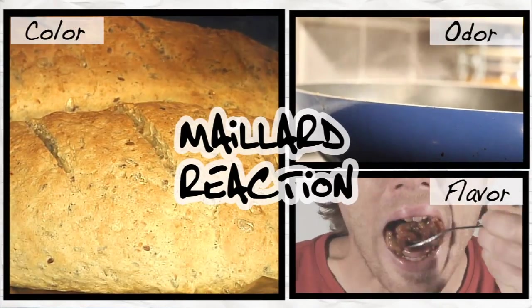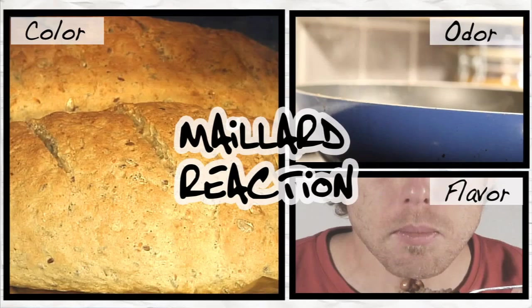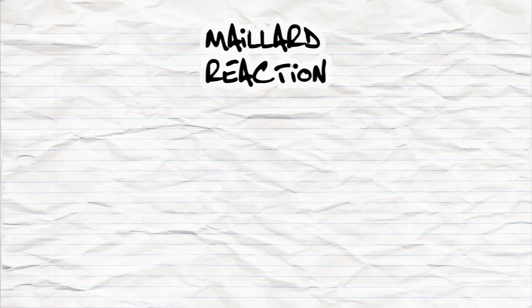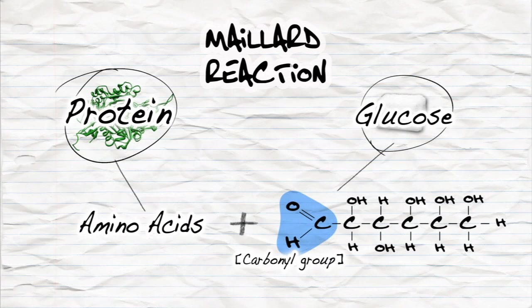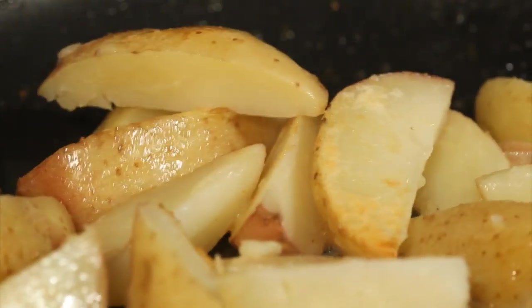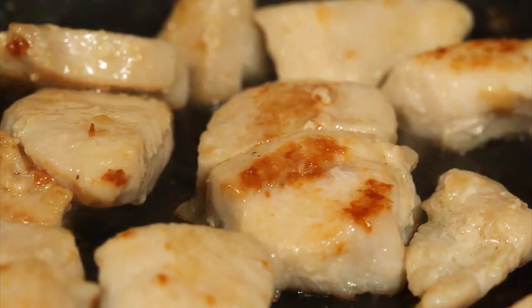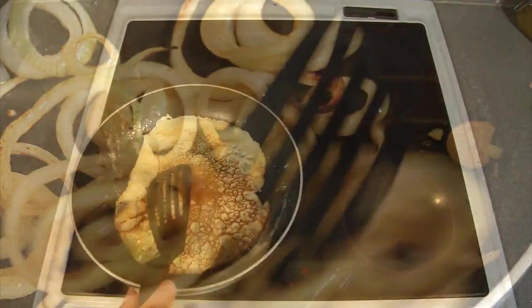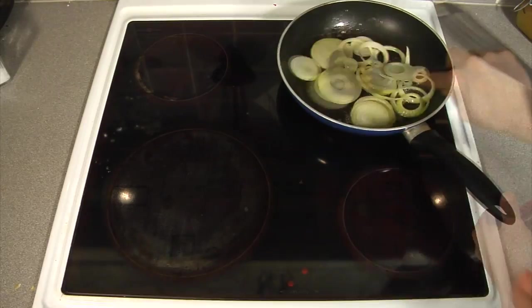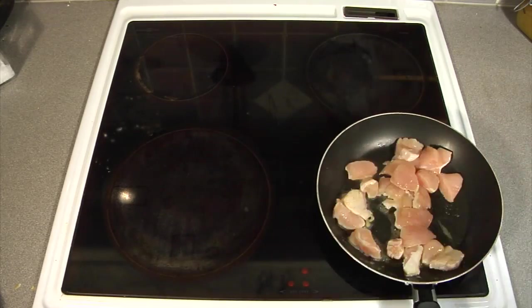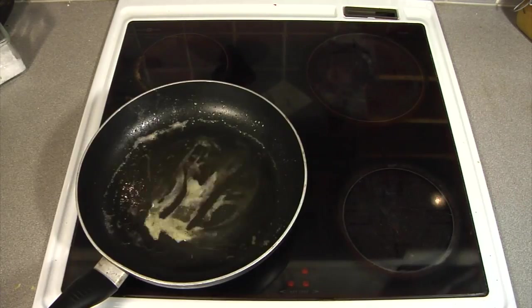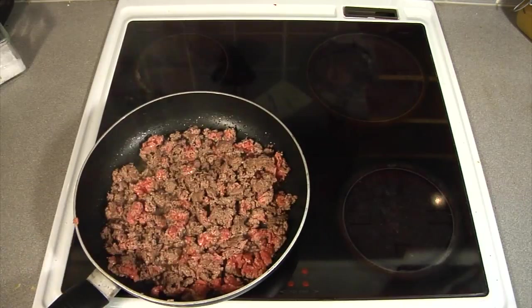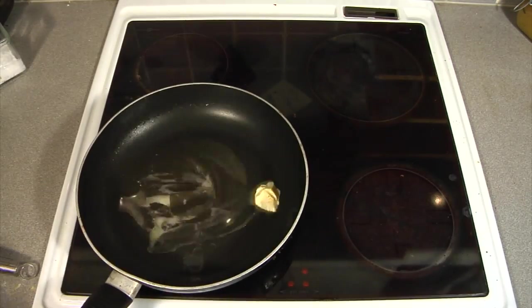The Maillard reactions are not actually fully understood. But we know that amino acids in protein react with carbonyl groups that can be found in, for example, sugar, and form many different flavor and odor molecules. The Maillard reactions happen in most of our food when we cook or bake it, because it is at these high temperatures that the Maillard reactions are doing their magic the best.